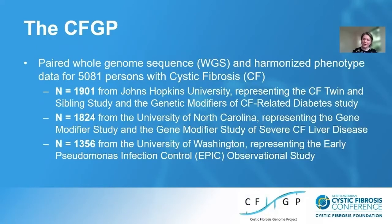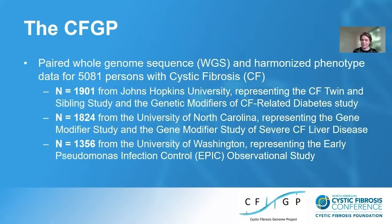The CFGP includes paired whole genome sequence data and harmonized phenotype data for over 5,000 persons with cystic fibrosis. The samples come from three different study sites and represent multiple studies. About a third comes from Johns Hopkins University, representing the twin and sibling study and a study of CF-related diabetes. Another third comes from the University of North Carolina, from a study of extreme lung function phenotypes and severe CF liver disease. The remaining samples come from the University of Washington, representing the EPIC-OBS study.